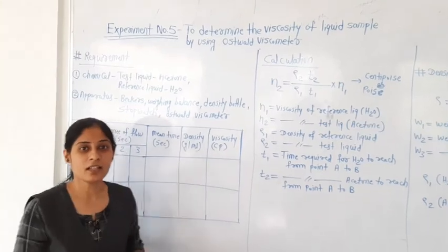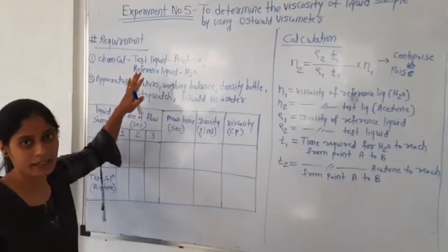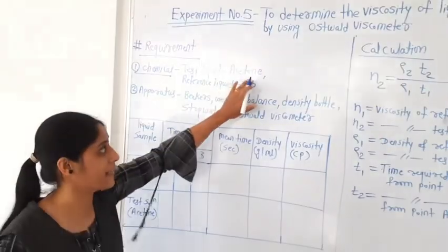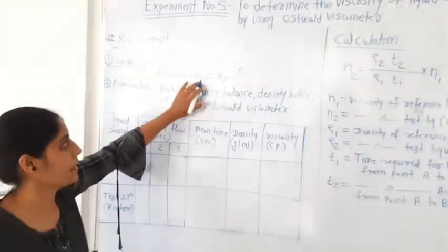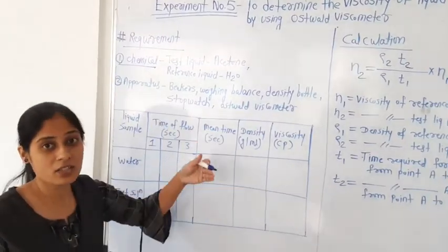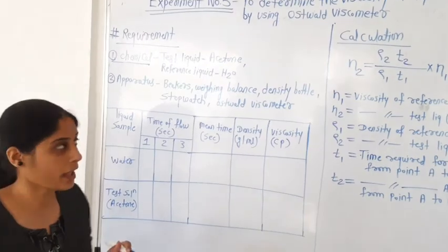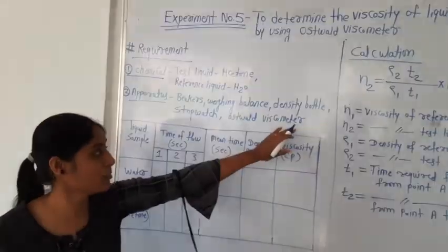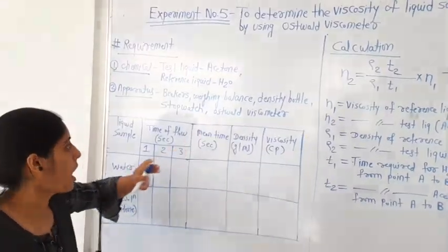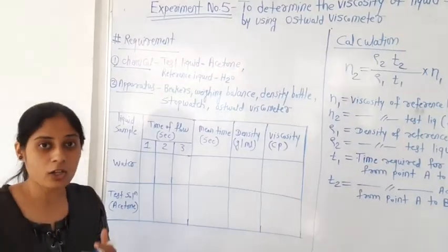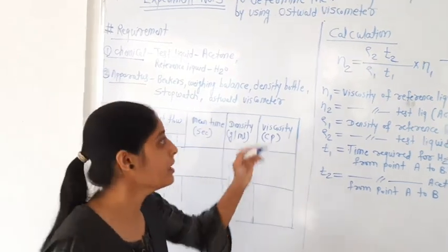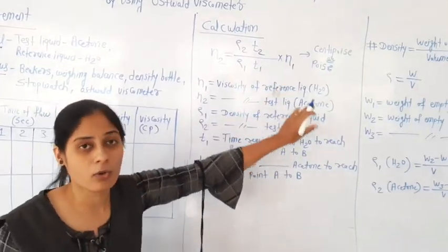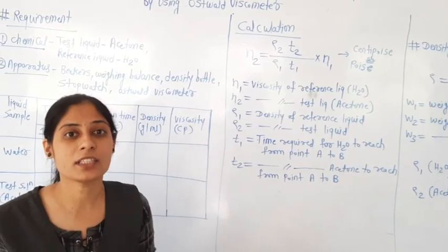Moving to the procedure. First the requirements: chemicals — test liquid, which is acetone, and reference liquid, which is water with known viscosity of 1.0012 poise. Apparatus: beaker, weighing balance, density bottle, stopwatch, and Ostwald viscometer. The formula used to determine viscosity is: η2 = (ρ2 × t2) / (ρ1 × t1) × η1. By using this equation, we determine the viscosity of the liquid sample.